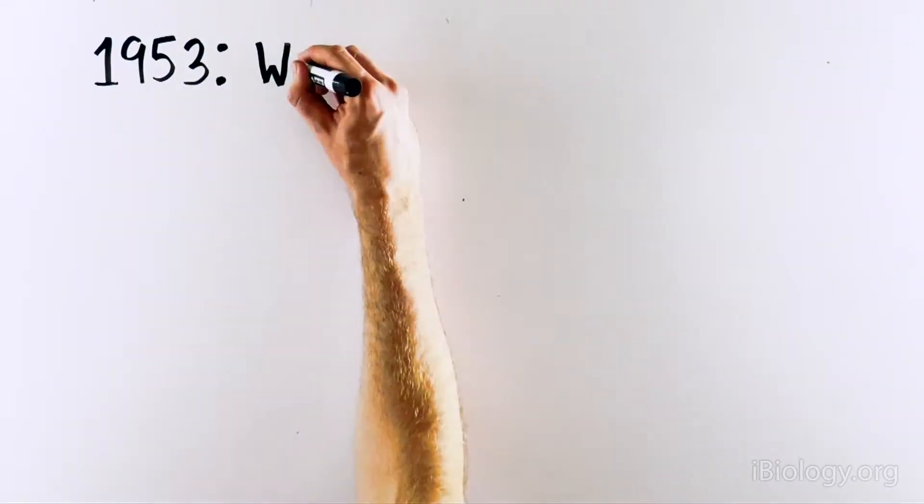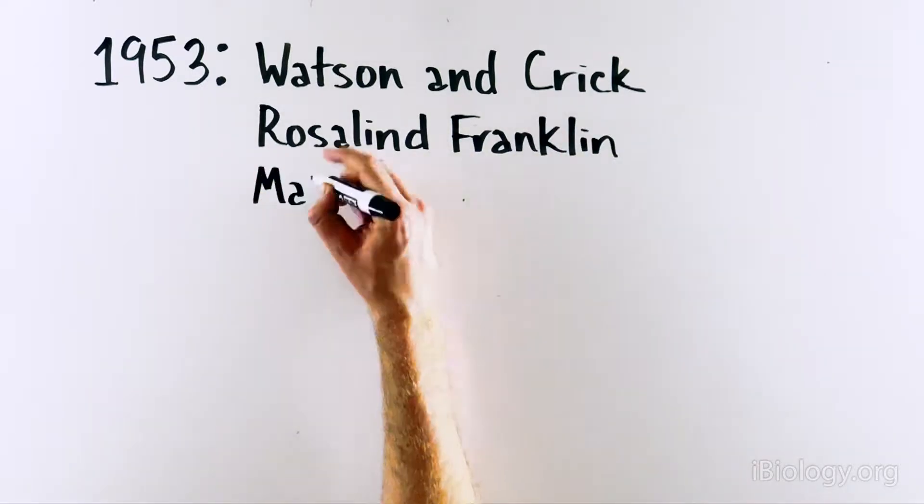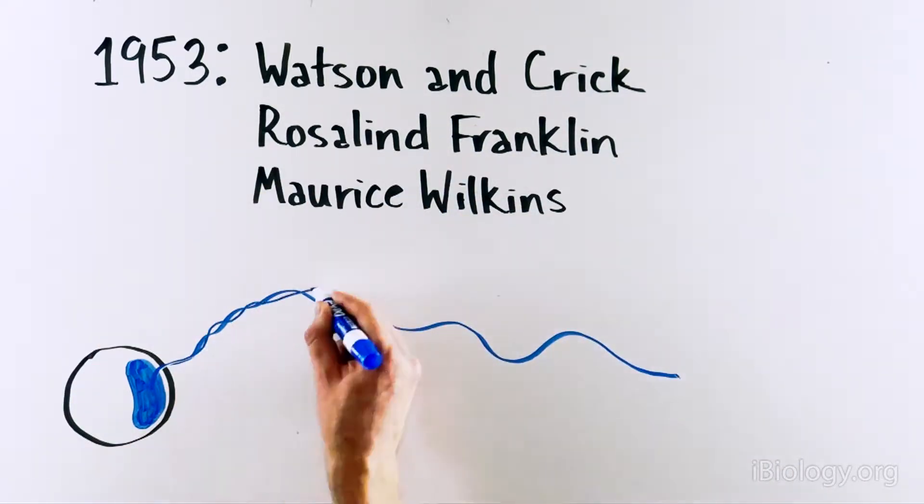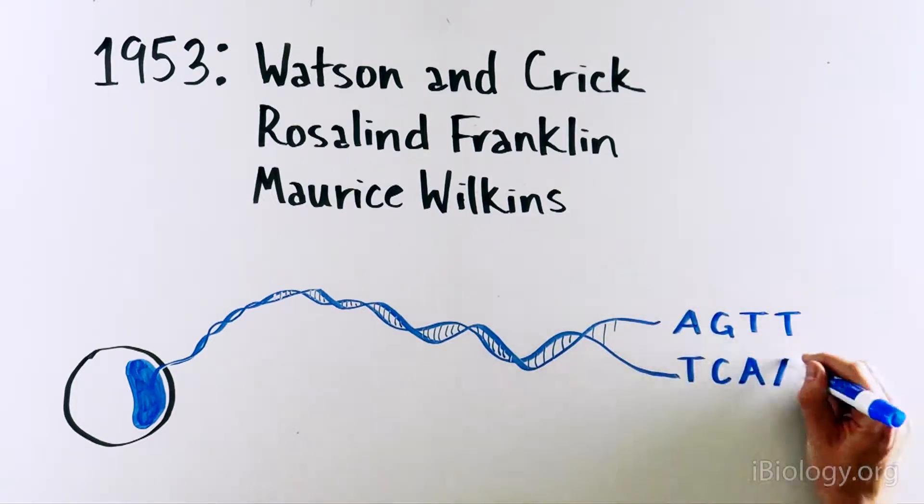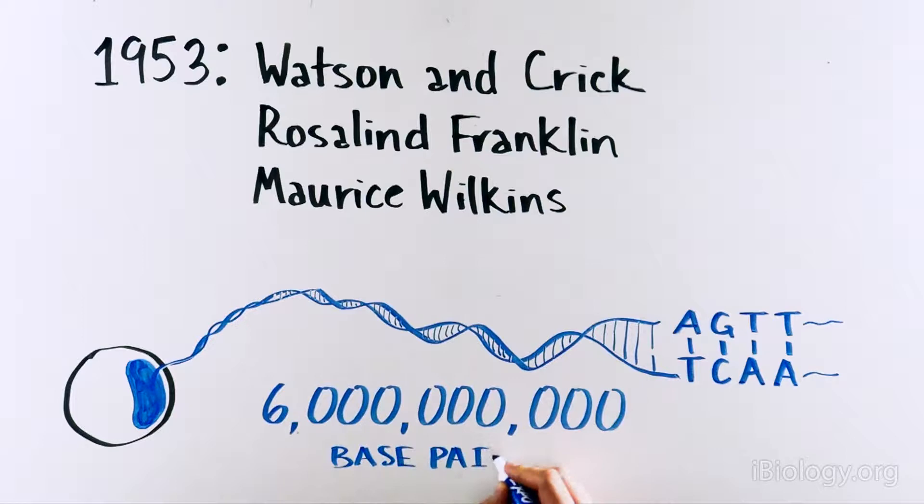In 1953 came Watson and Crick, who, with the help from colleagues Rosalind Franklin and Maurice Wilkins, discovered how the six billion base pairs that make up our genetic material are stored in the cell. The DNA was actually a helix made of two strands.